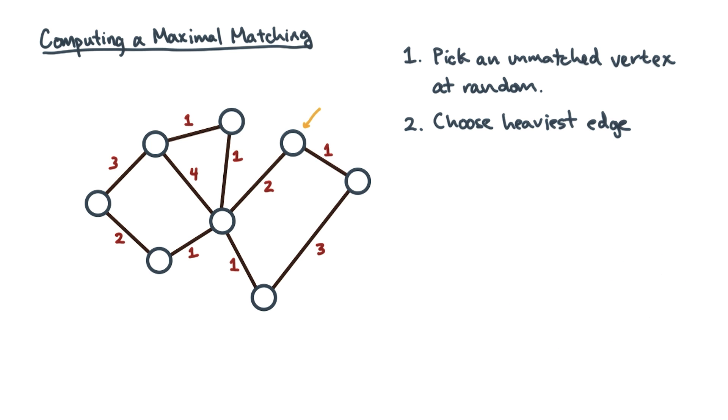For instance, suppose these are the edge weights. Among the two unmatched neighbors, this edge has the higher edge weight, two versus one, so you'd choose it. But why is the heavy edge matching strategy a good one?